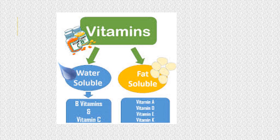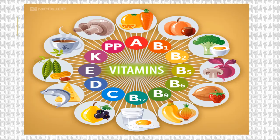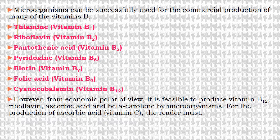Here we are going to see the production of Vitamin B12 as an example. Looking at this diagram, you can see the types of vitamins: A, B1, B2, B5, B6, B9, B12, C, D, E, K, and some pro-vitamins, along with their food sources. In the Vitamin B group: thiamine is B1, riboflavin is B2, pantothenic acid is B5, pyridoxin is B6, biotin is B7, folic acid is B9, and cyanocobalamin is B12.